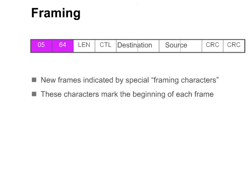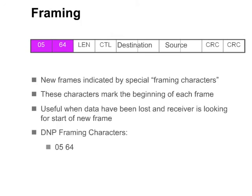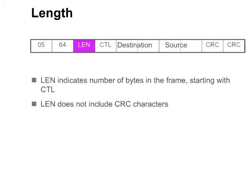The framing characters indicate the start of a new frame. Receiving devices monitor incoming data looking for the 0564 sequence as an indicator that a new frame has begun. The length indicator indicates the number of bytes in the frame, starting with the byte after the length character, the control field. The length does not include any CRC characters.